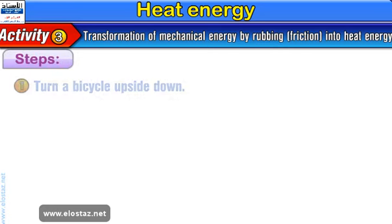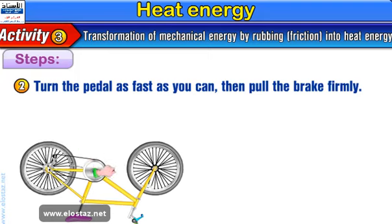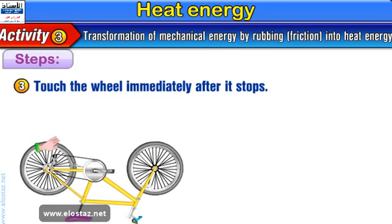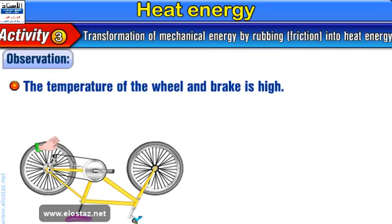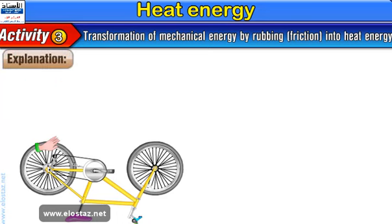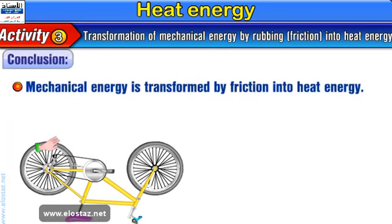Activity 3: Transformation of mechanical energy by rubbing and friction into heat energy. Steps: 1. Turn the bicycle upside down. 2. Turn the pedal as fast as you can, then pull the brake firmly. 3. Touch the wheel immediately after it stops. Observation: The temperature of the wheel and brake is high. Explanation: The friction between the wheel and the brakes led to their temperature increase. Conclusion: Mechanical energy is transformed by friction into heat energy.